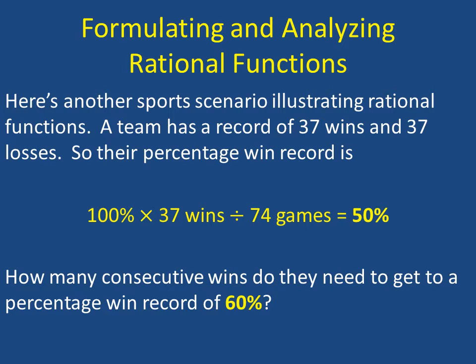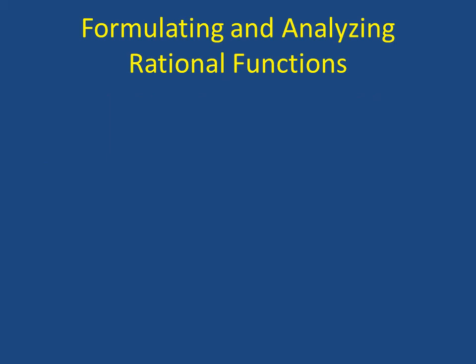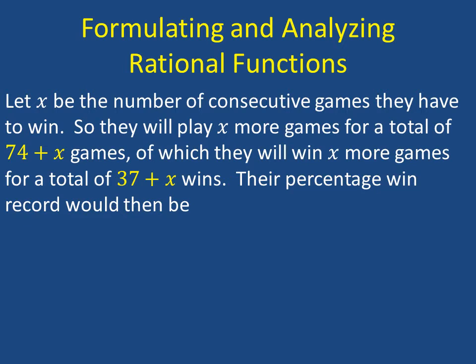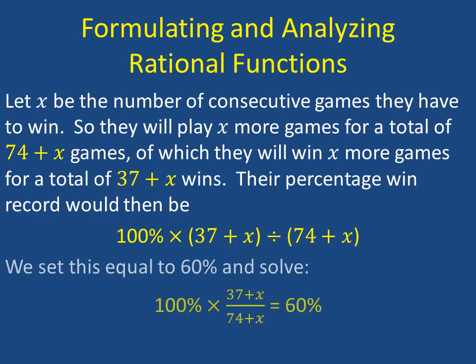Well, let's let X be the number of consecutive games that they have to win. So they're going to play X more games for a total of 74 plus X games, of which they will win the same amount, X games, for a total of 37 plus X wins. So the percentage win record would then be 100% times 37 plus X, the number of games played and won, divided by 74 plus X, the total number of games played. We're going to set this equal to 60% and solve to see what the value of X is that makes this work.